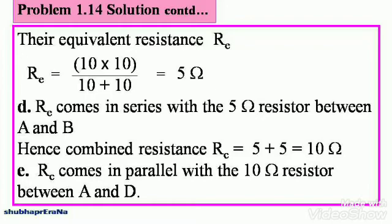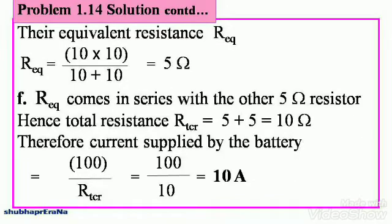Now Re comes in series with the 5 ohm resistor between points A and B. Hence combined resistance Rc equals 5+5, and that is 10 ohms. You know that you add resistances in series. Now Rc comes in parallel with the 10 ohm resistor between A and D. Keep looking at the figure.